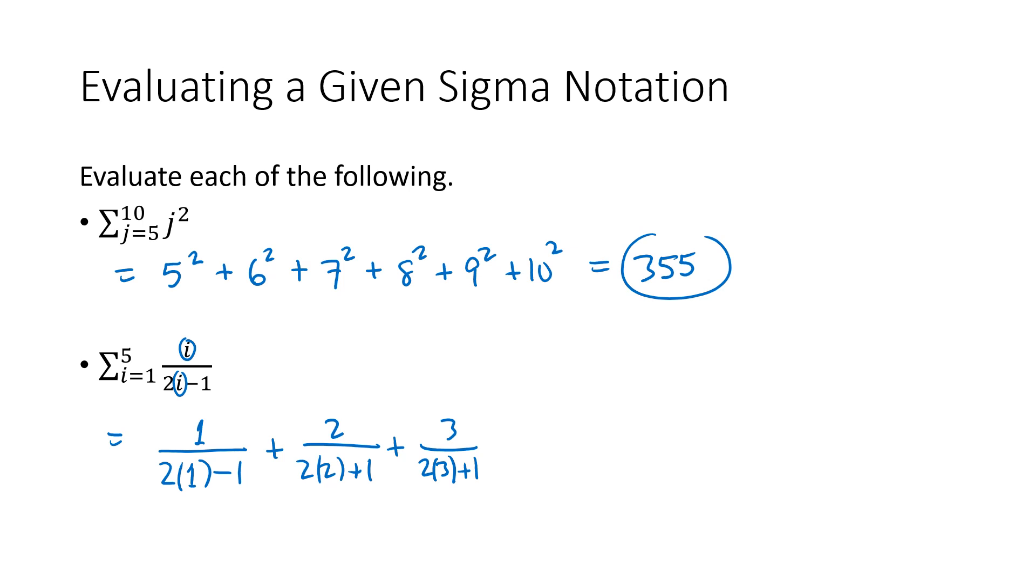That should be minuses on the bottom, minus 1 minus 1, and then 4 over 2 times 4 minus 1, and then 5 over 2 times 5 minus 1. So 1 divided by 1 is 1, this is going to be 2 thirds, this is going to be 3 fifths, this is going to be 4 sevenths, and then finally 5 ninths. We add all those together. When we work all that out we get 1069 divided by 315.